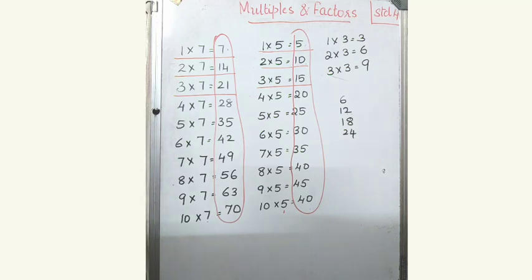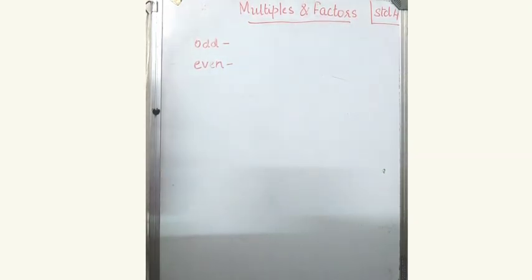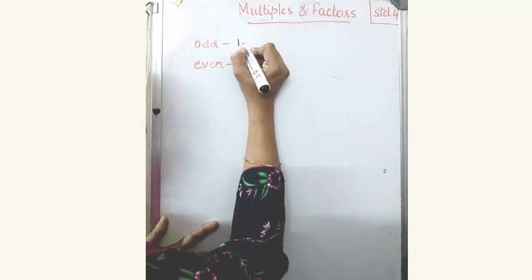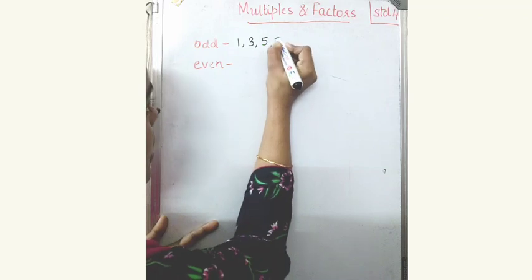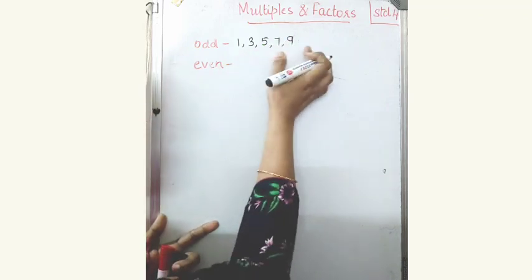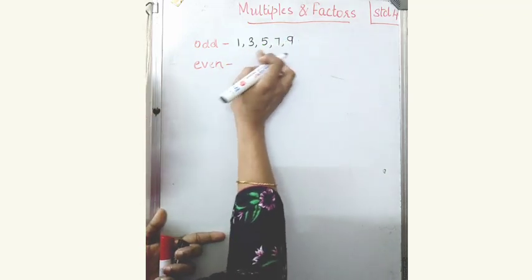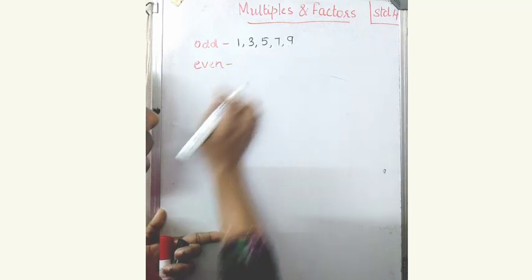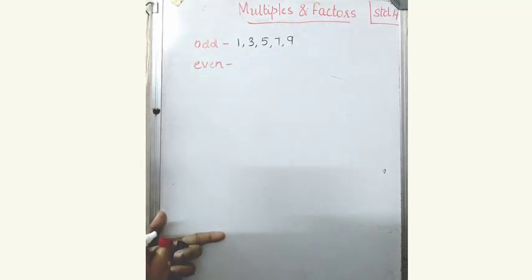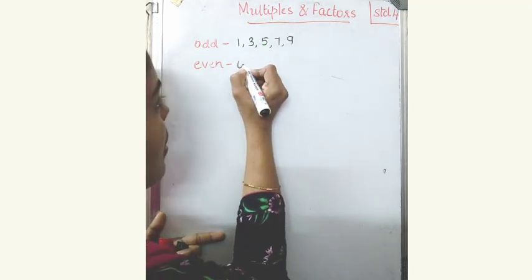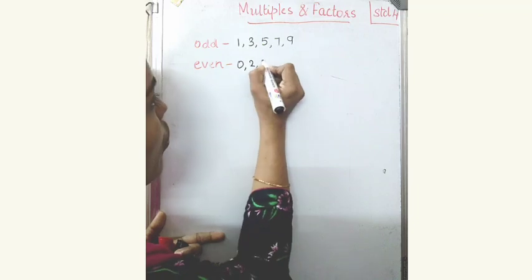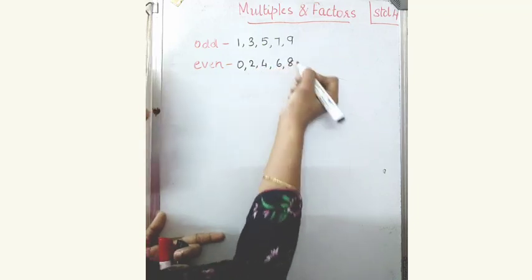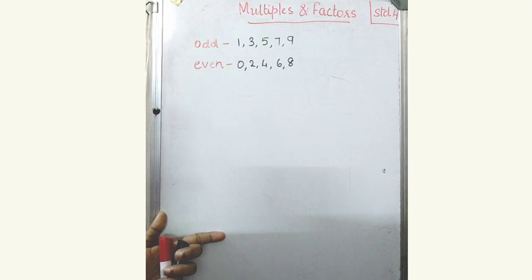Do you know odd numbers and even numbers? What is an odd number? The numbers that end with 1, 3, 5, 7, or 9 are called odd numbers. What about even numbers? The numbers that end with 0, 2, 4, 6, or 8 are called even numbers.